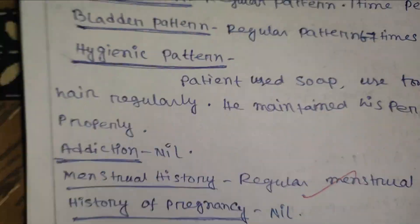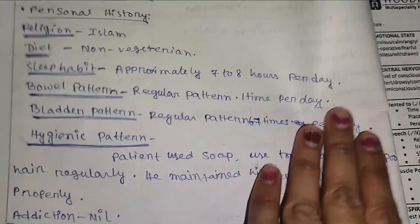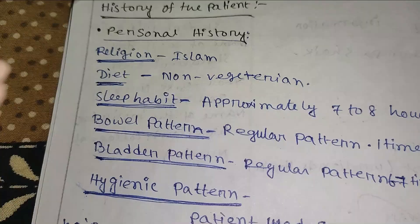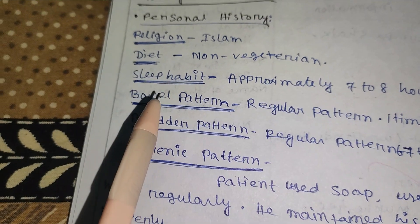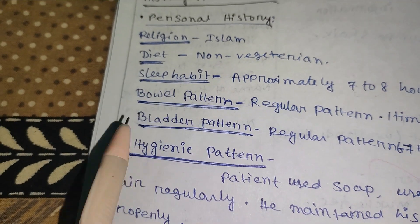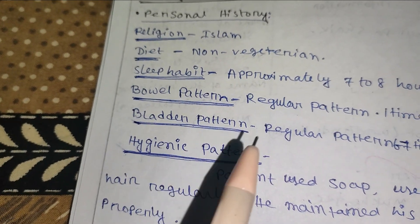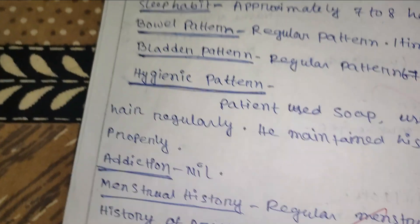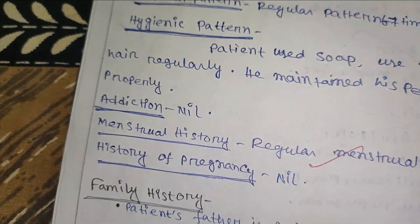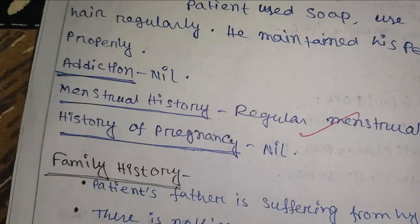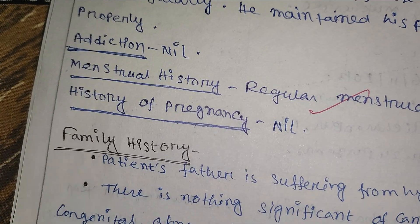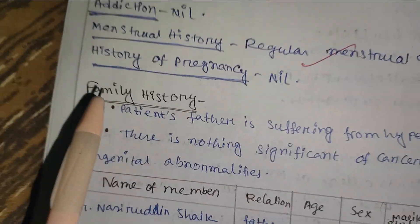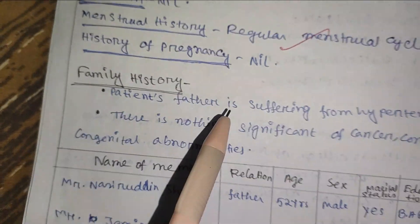Next is the complete patient history. This includes personal history — religion, diet, sleep habit, bowel pattern, bladder pattern — followed by addiction history, menstrual history, history of pregnancy, and family history.